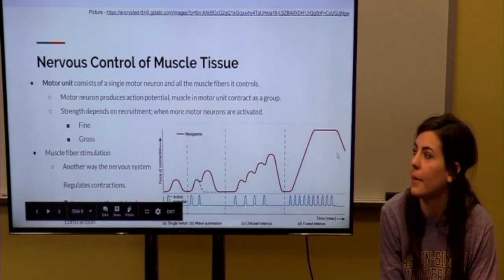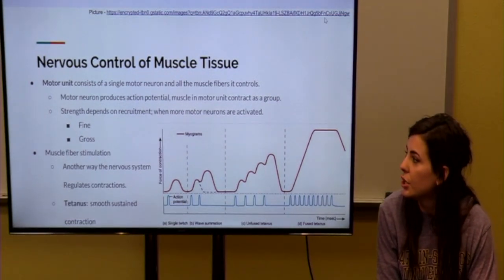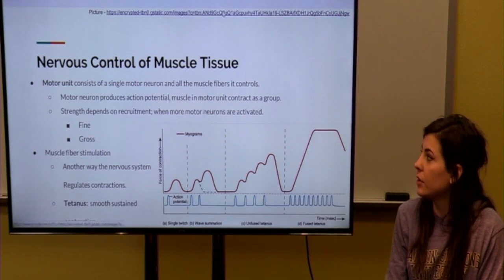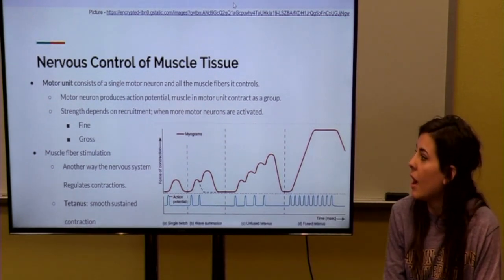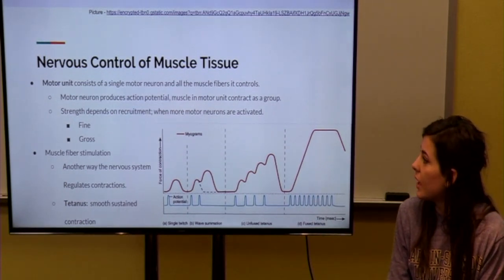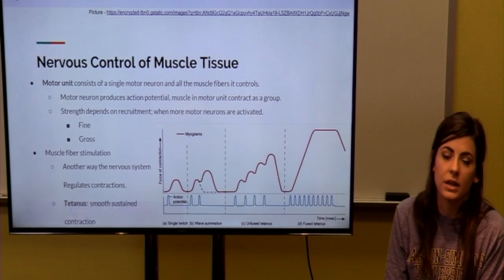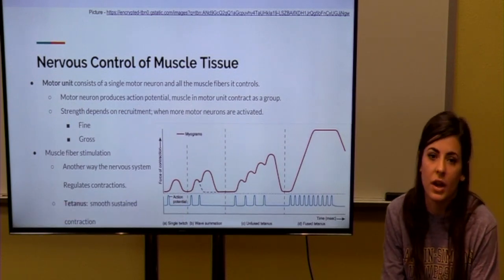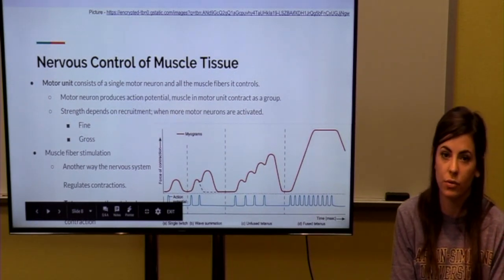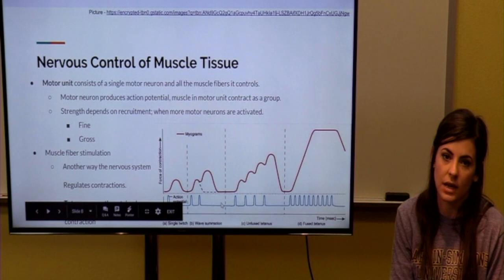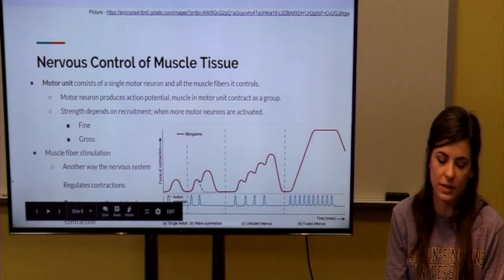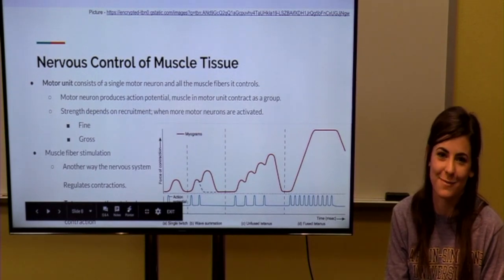Next, I will be talking about the nervous control of muscle tissue. So, a motor unit consists of a single motor neuron and all the muscle fibers that it controls. A motor neuron produces an action potential, like we talked about earlier, and then the muscles in the motor unit contract as a group. And the strength of the muscle depends on the recruitment of the motor neurons that are activated, and this results in either fine motor movements or gross motor movements, which we are going to show you an example of right now.